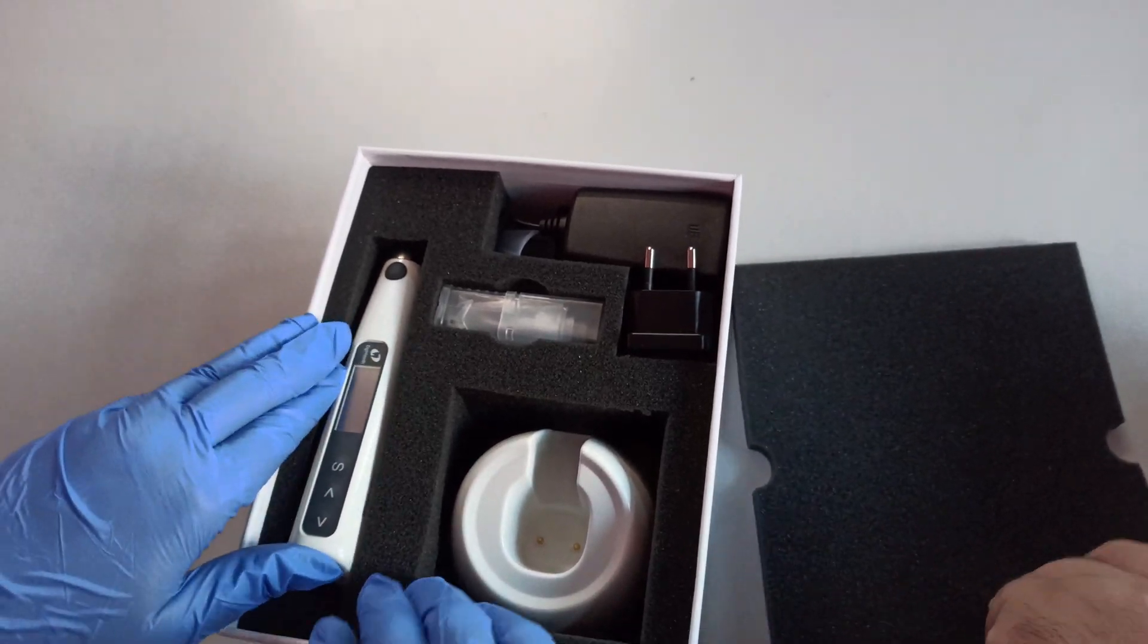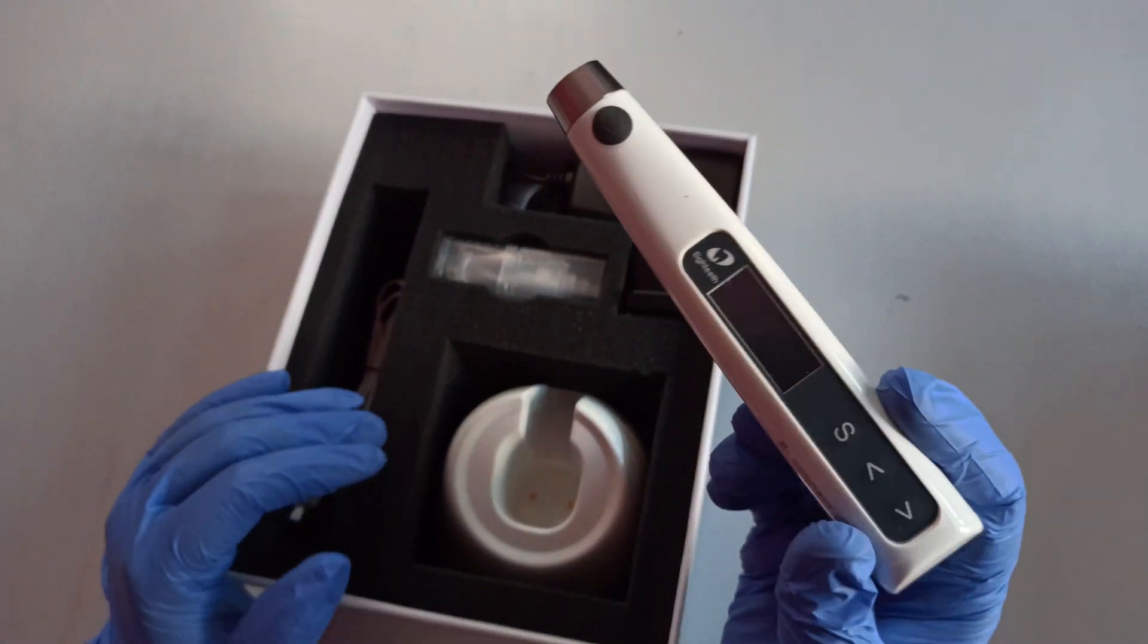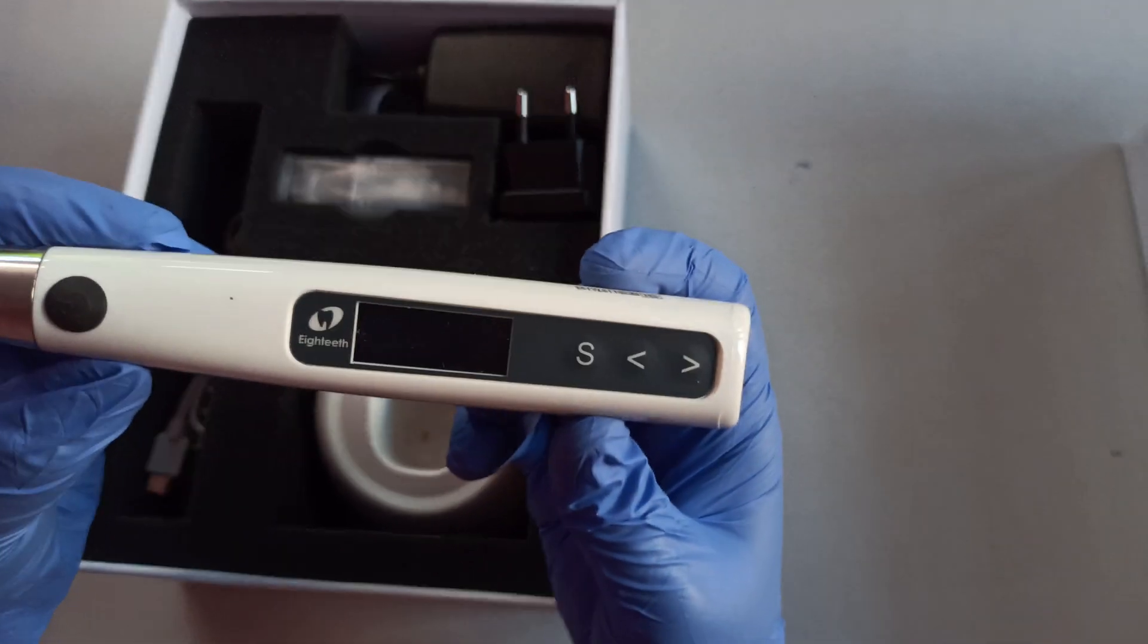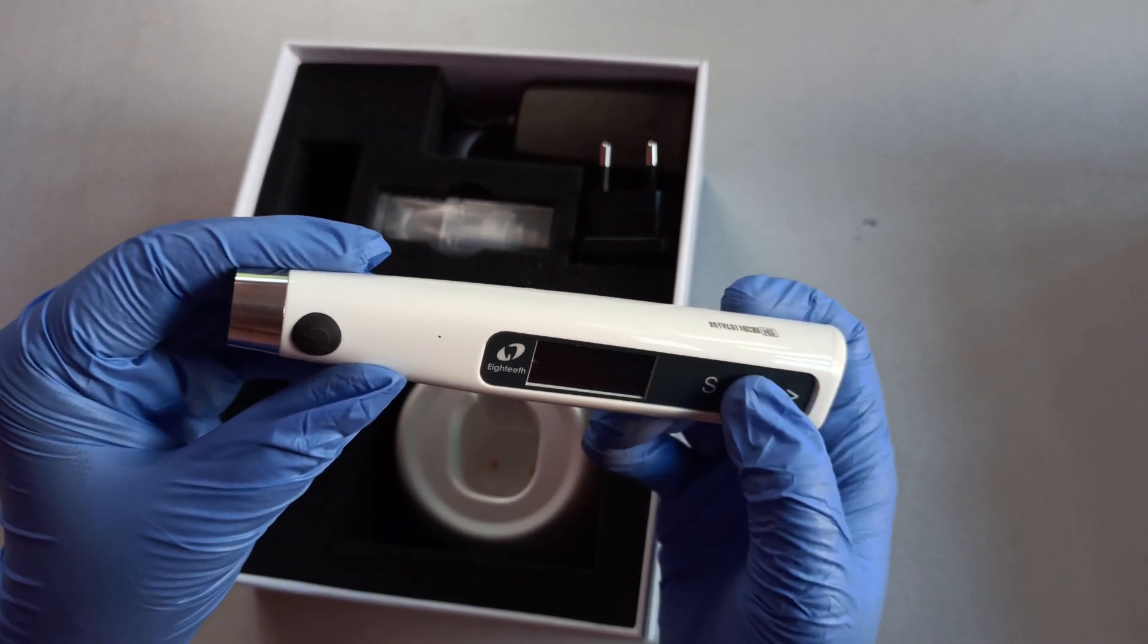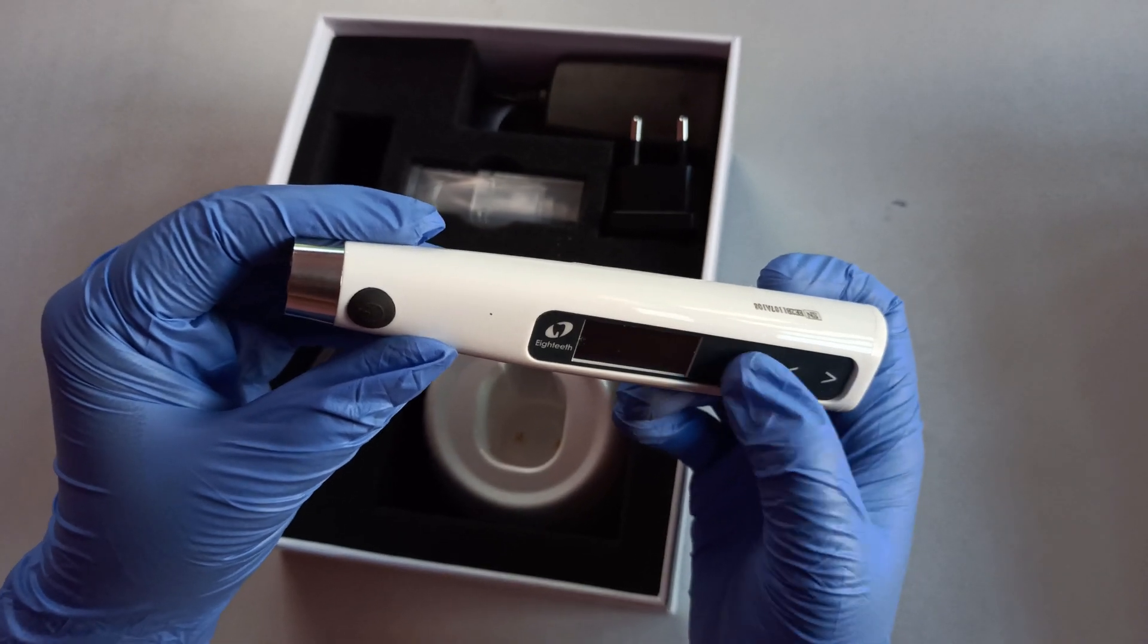Let's look at the parts of the motor. The first part is the motor handpiece. In this, you will find four buttons: the power button, system button, and up and down arrow buttons for changing the features.